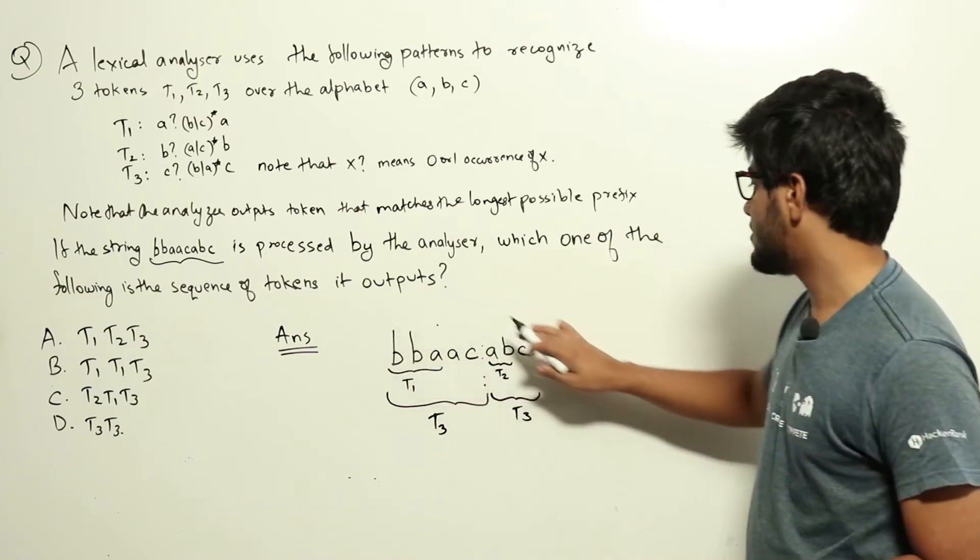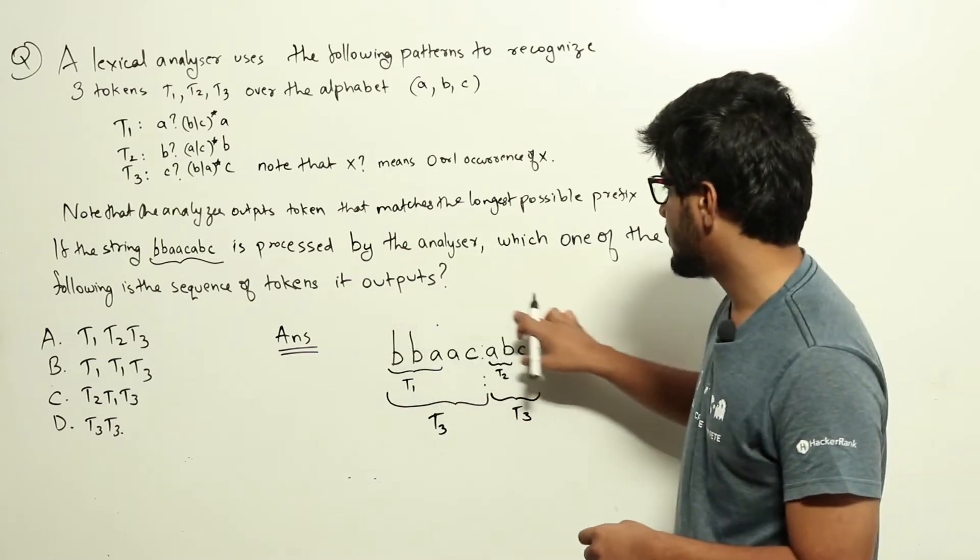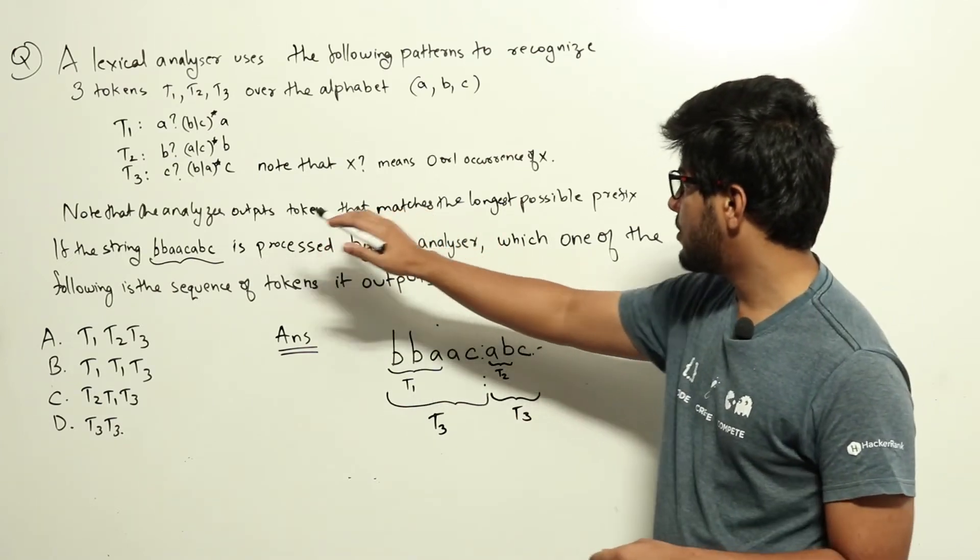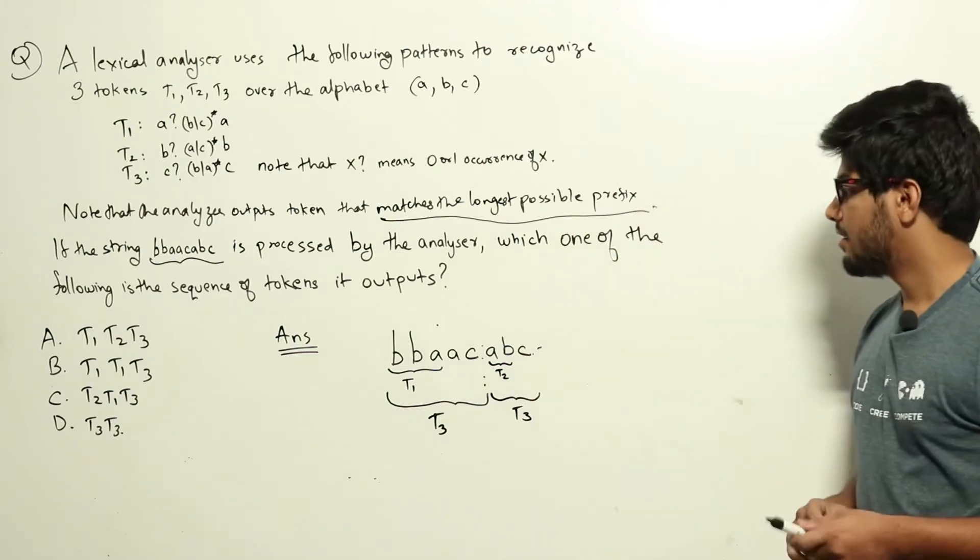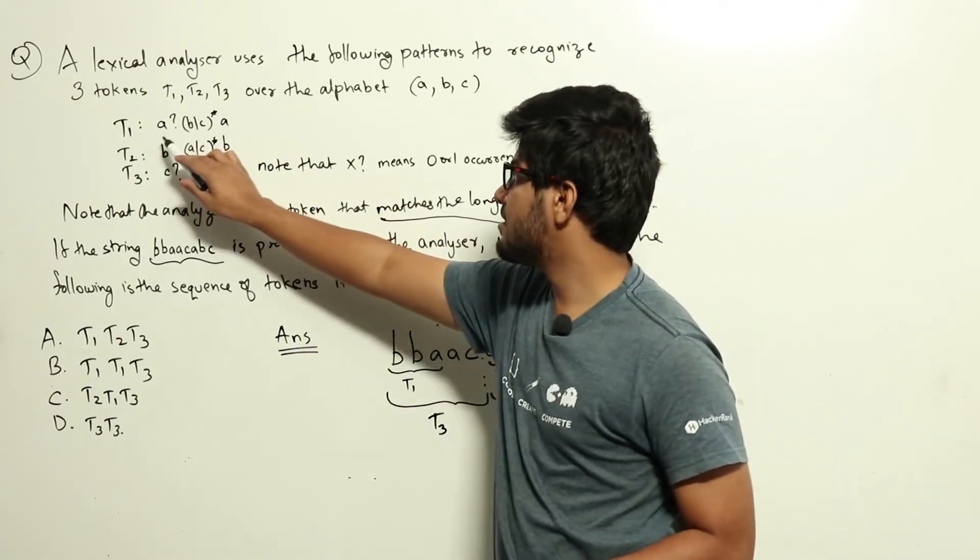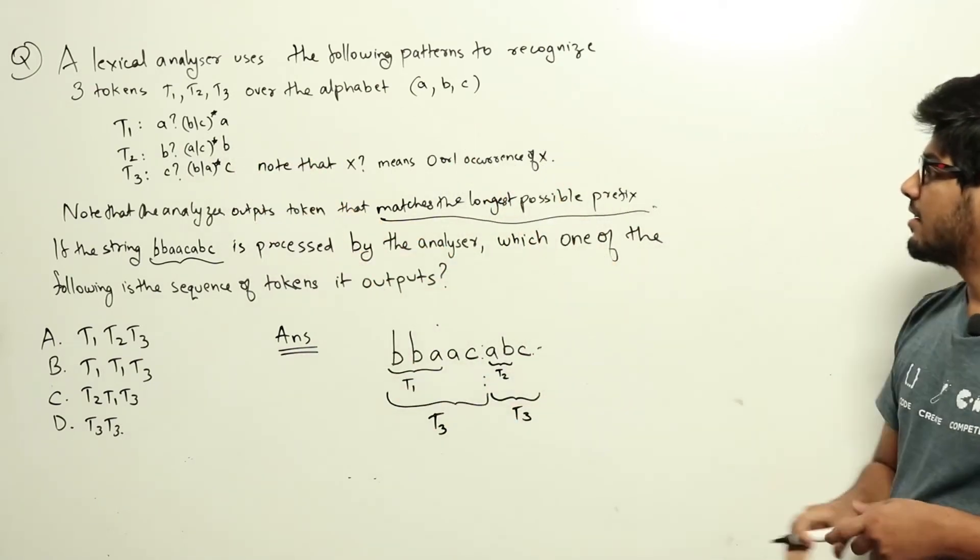Now let's try to go through it one by one. The important point to note here is that it matches the longest possible prefix. Now let's take a look at T1. This is a question mark b or c star a, which means zero or one occurrence of a, then b or c any number of times, and then ending with a.